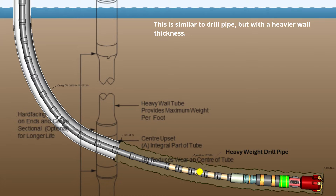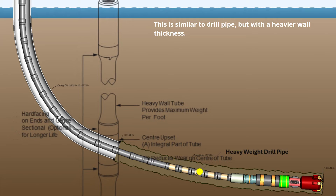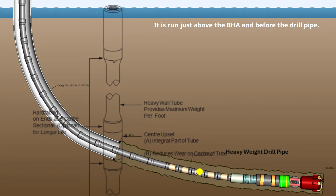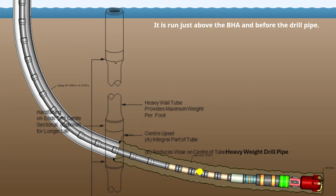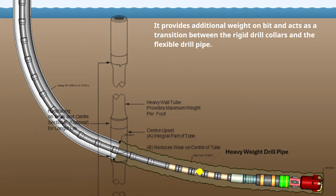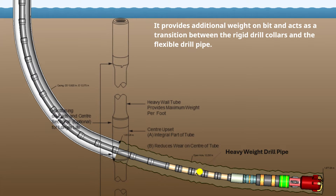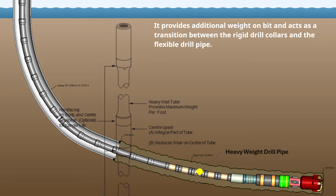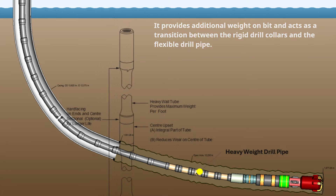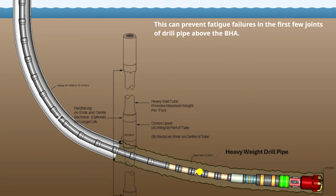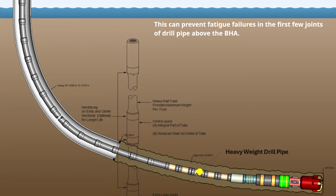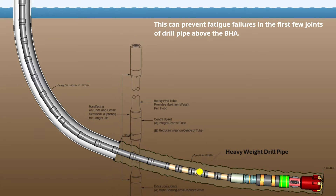Next is the heavyweight drill pipe, which is similar to drill pipe but with a heavier wall thickness. It is run just above the BHA and before the drill pipe. It provides additional weight on bit and acts as a transition between the rigid drill collars and the flexible drill pipe, which can prevent fatigue failures in the first few joints of drill pipe above the BHA.